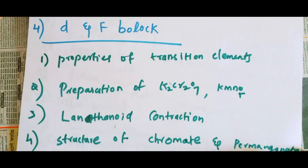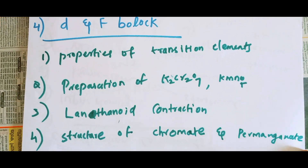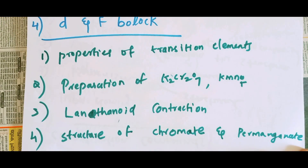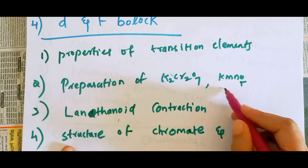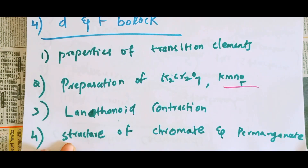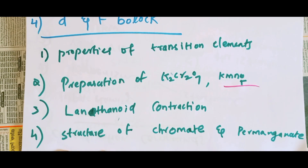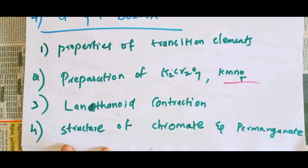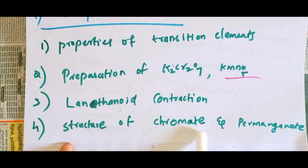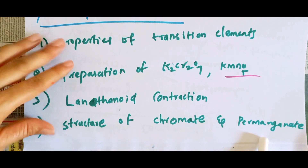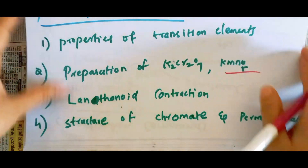What is the d-block elements? The properties of transition elements. Preparation of K₂Cr₂O₇. Preparation of KMnO₄. What is the consequence of the lanthanide contraction? What is the chromate and permanganate structure?